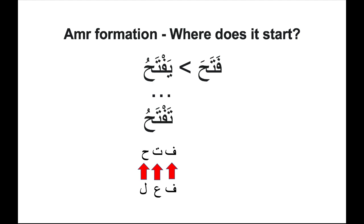Before we move further, it's very important that you know this very basic thing. All the root verbs follow the pattern of fa'ala. For example, fataha, kafara, ghafara, qatala. We need to identify the fa' kalima, ain kalima, and lam kalima in every root verb. In fataha: fa is fa' kalima, ta is ain kalima, ha is lam kalima. In qatala: qa is fa' kalima, ta is ain kalima, la is lam kalima. In ja'ala: ja is fa' kalima, a is ain kalima, la is lam kalima. In samiya: sa is fa' kalima, mim is ain kalima, ain is lam kalima.